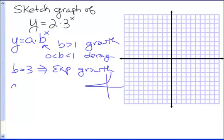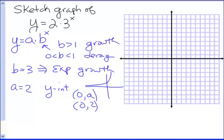A, which in this case is 2, is in an application problem our initial amount, and on a graph a gives us the y-intercept. For our basic y equals a·b to the x, our y-intercept is at (0, a), and for this problem it is at (0, 2). So we have a point on our graph at (0, 2).